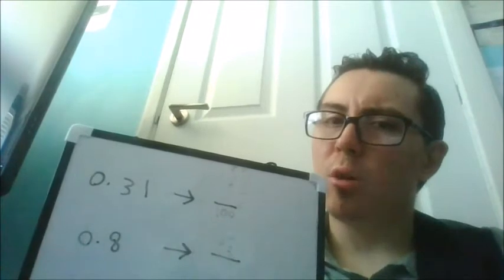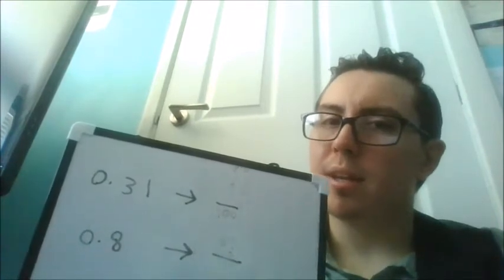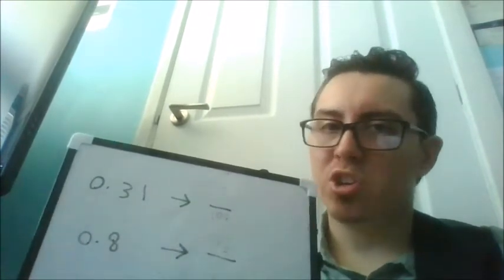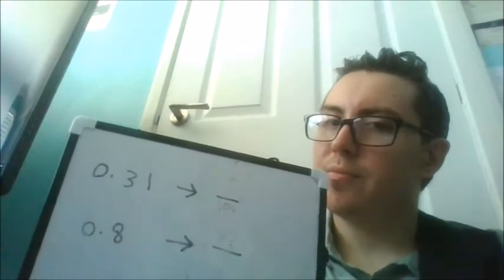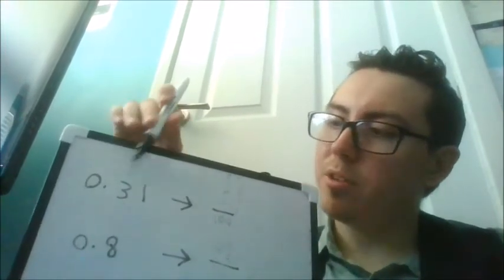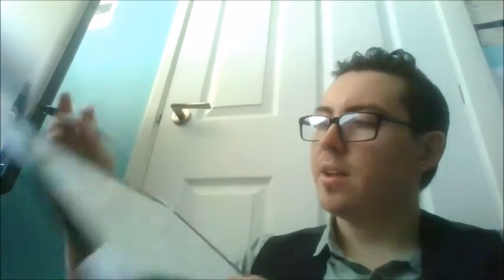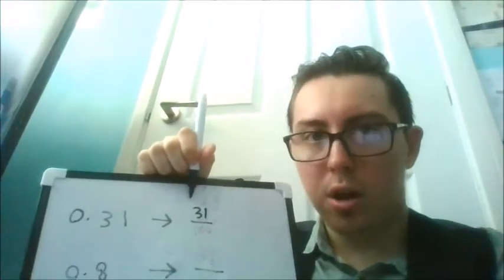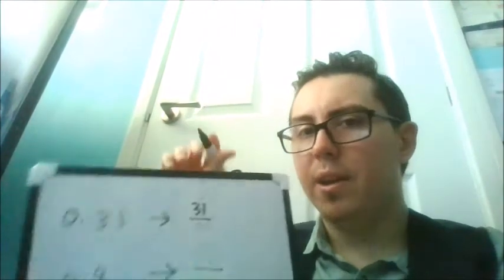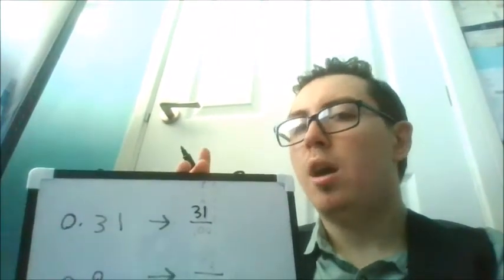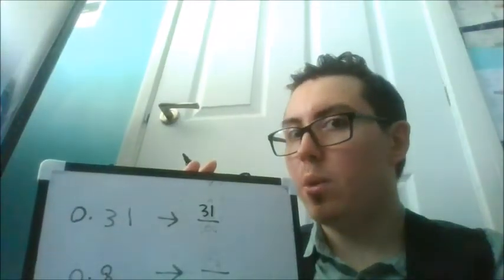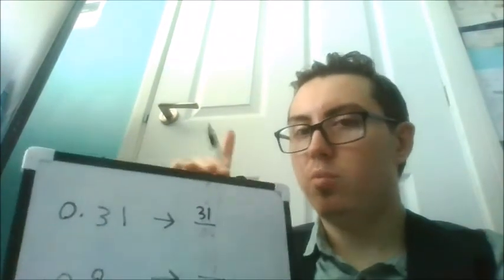But how many goes on top? What's our numerator going to be? It's going to be thirty-one because we've got 0.31. So it's going to be 31, because if we've got 100 over 100, that will equal one whole because 100 over 100, it's one whole, it's one.